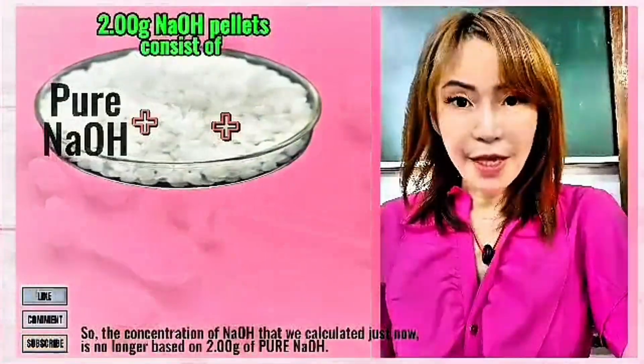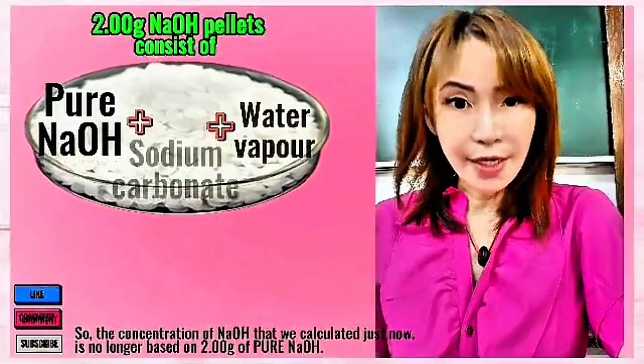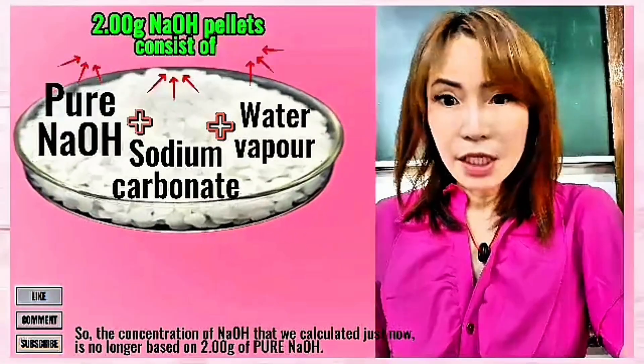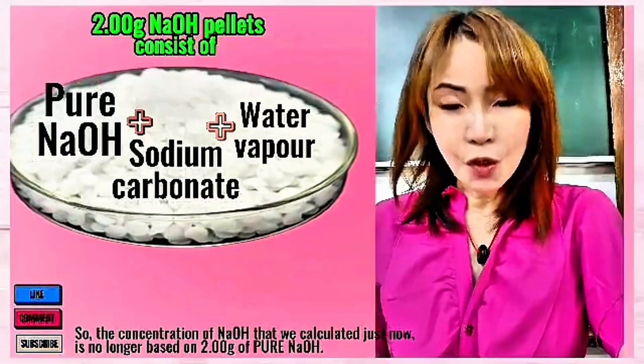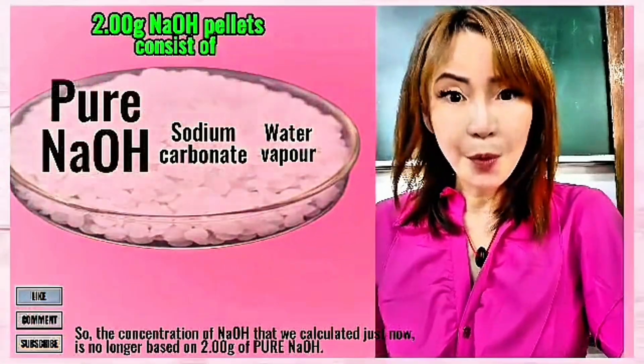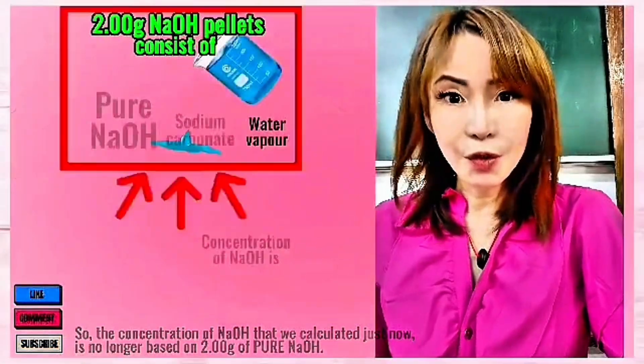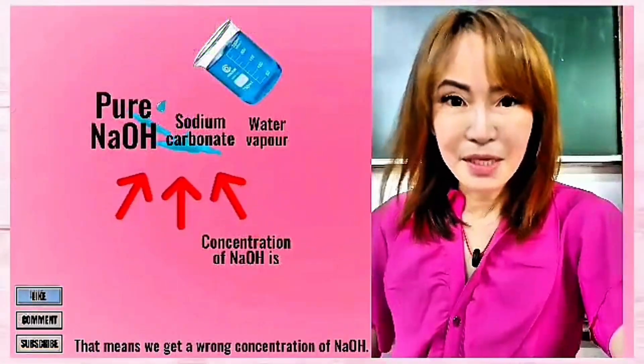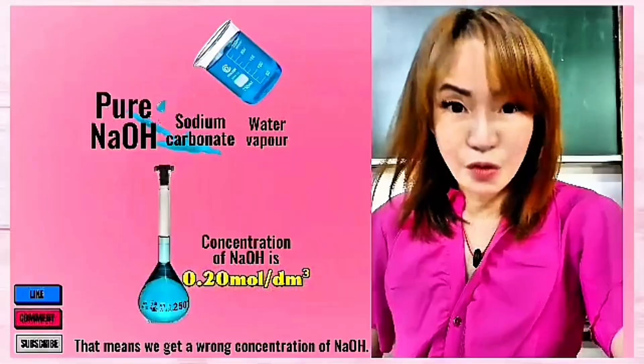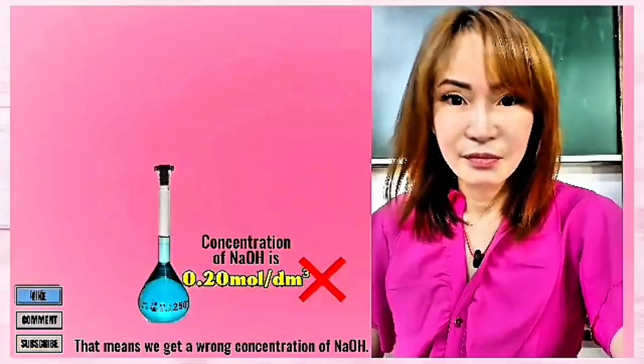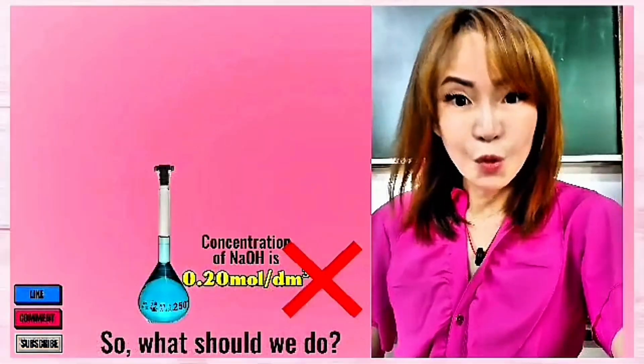So the concentration of NaOH we calculated is no longer based on two grams of pure NaOH. That means we get a wrong concentration. So what should we do?